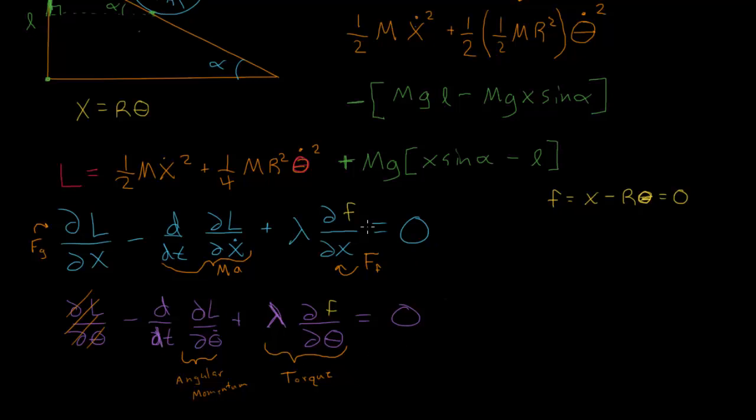In the last video, we introduced this method of undetermined multipliers, and in this video we're actually going to move forward and solve all these things and find what all the pieces are. So let's plug in our Lagrangian here and do the derivatives and see what we get for each of these things.